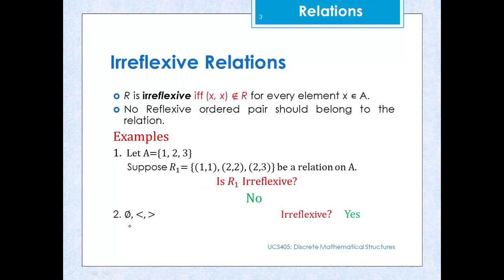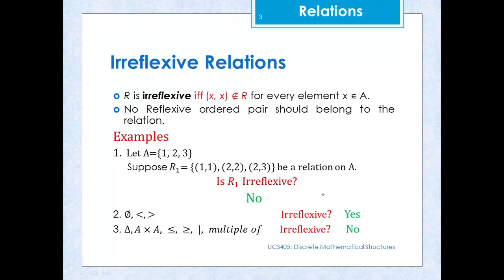More examples: the empty relation phi is irreflexive. Relations of type less than and greater than are also irreflexive. But the equality relation delta, the universal relation, and relations of type less than or equal to, greater than or equal to, divides, and multiple of — all these are not irreflexive.